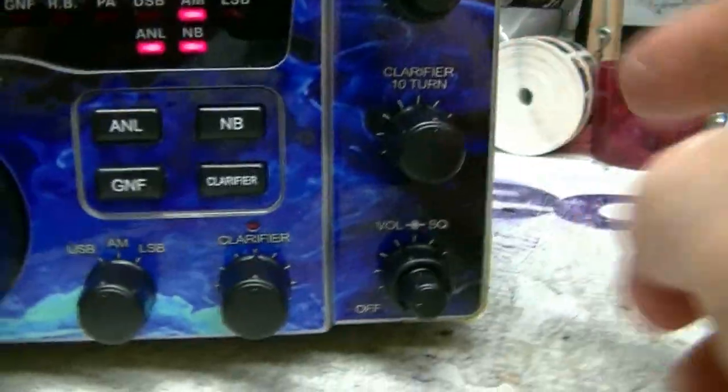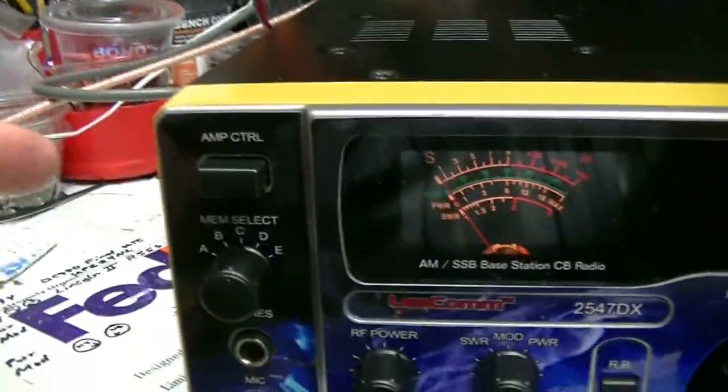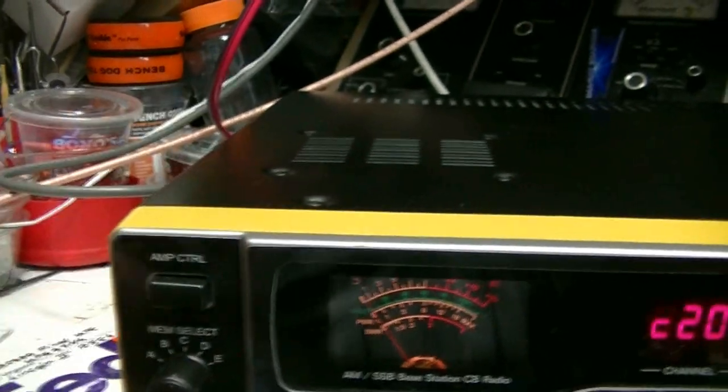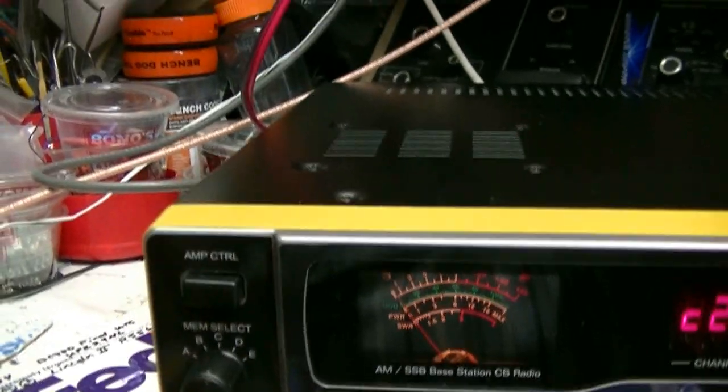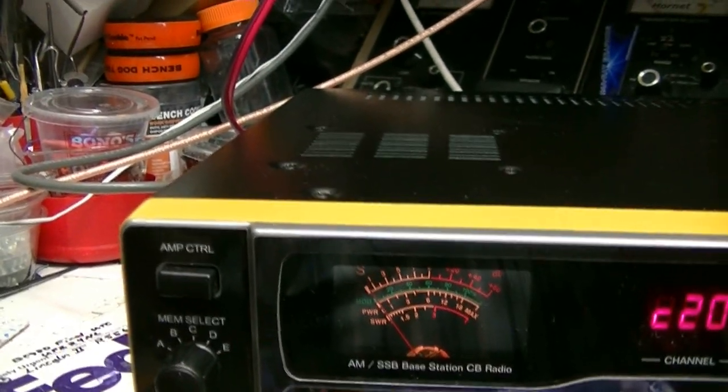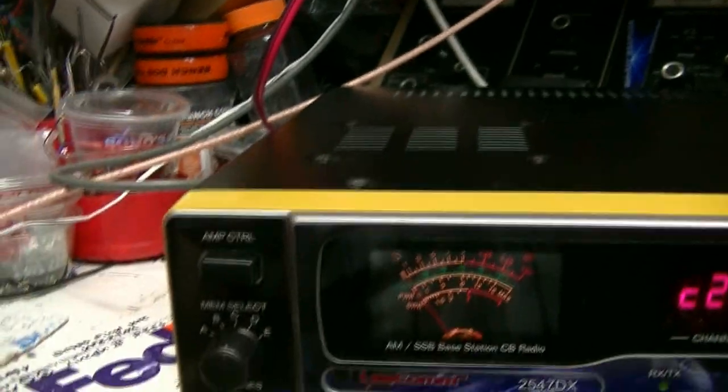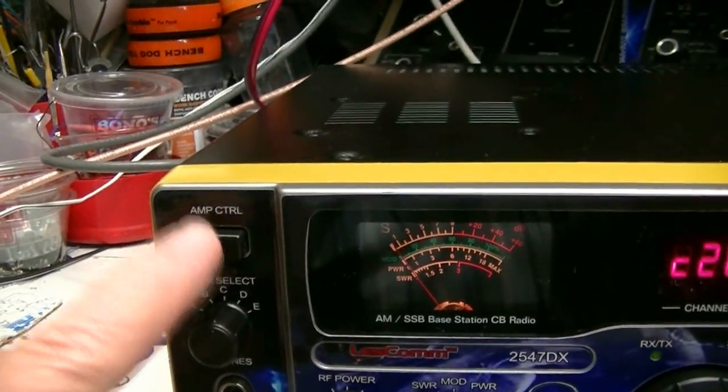10-turn clarifier, volume and squelch. You turn the radio on and off down here. This is your amp control, and what this does is enable that relay I showed you in the back for the direct key port. Now with this guy turned on, the center conductor of that RCA jack is connected to the shield or the case of the radio when you key the microphone with this guy turned on.